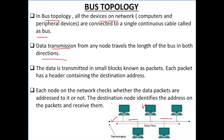The data is transmitted in small blocks known as packets. In the header of packets there is a destination address — where that data has to go. Each packet has a header containing the destination address, which tells where those packets will travel. Each node on the network checks whether the packets are addressed to it or not. The destination node identifies the address on the packets and receives them.